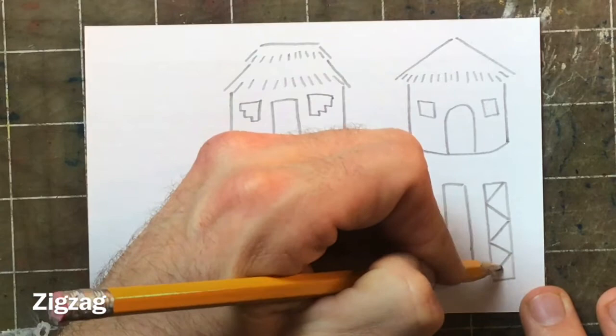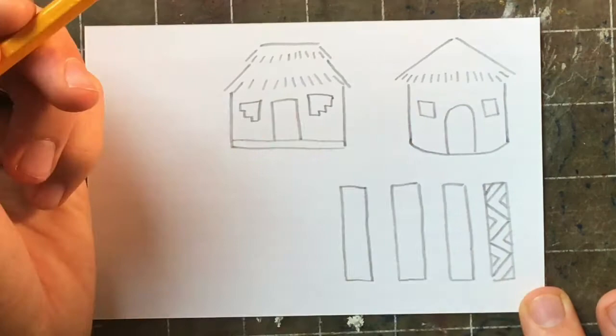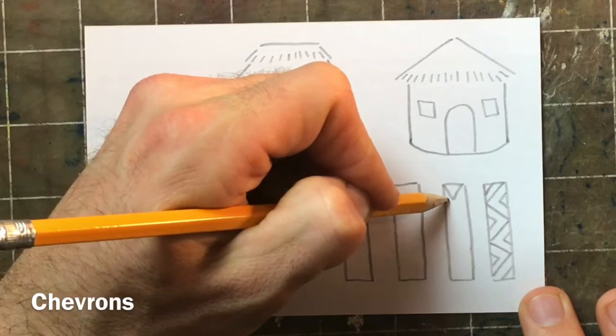This is a regular zigzag—it goes from side to side. I'm going to add some echo lines to give it a little bit more flair. I saw that several times on those houses.